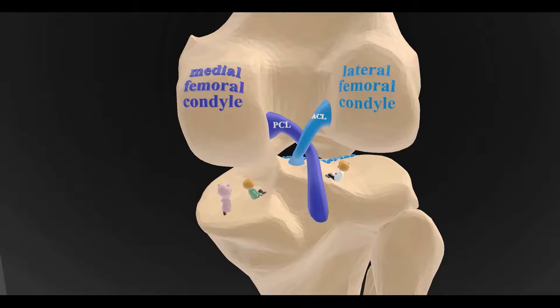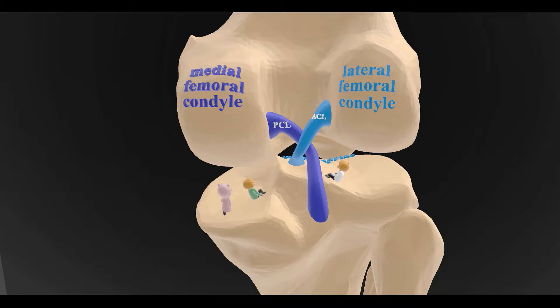The opposite is true of the PCL. The PCL inserts at the back of the tibia, so if the PCL is torn, the tibia will be able to move more posteriorly. That's how we test for tears in the ACL and the PCL.